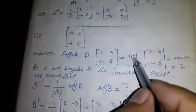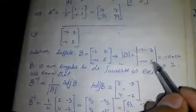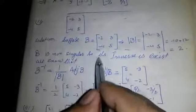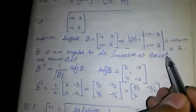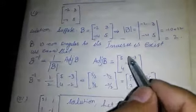Part 2: suppose B = [[-2, 3], [-4, 5]]. The determinant of B equals (-2)(5) minus (3)(-4) = -10 + 12 = 2. B is non-singular, so its inverse exists. We know that B⁻¹ = (1 / det(B)) times the adjoint of B. The adjoint of B = [[5, -3], [4, -2]].